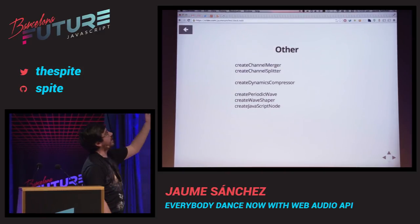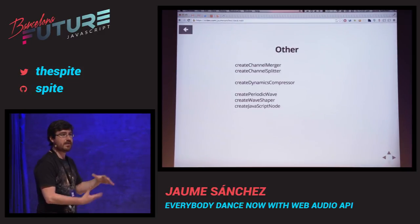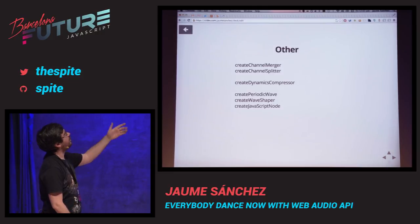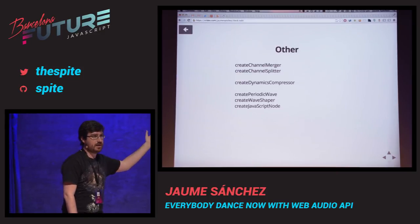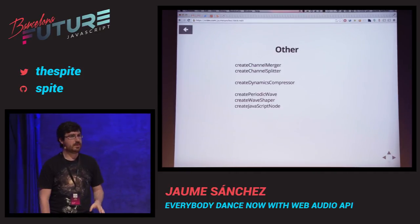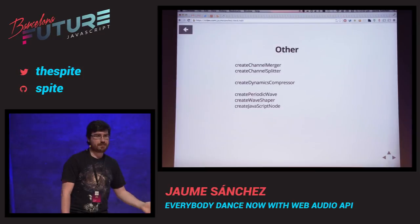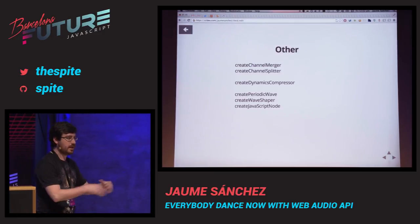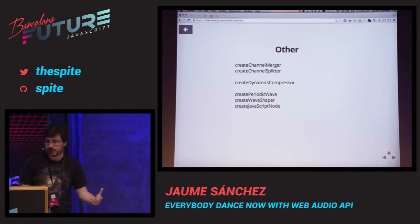There are some other nodes: you can split channels and merge them again. The dynamics compressor tries to prevent clipping and getting things out of hand, so usually you just stick it at the end of your chain before the context destination. You can create periodic waves, a wave shaper — also complex things. And the ScriptProcessor node, which is like the shader of 3D graphics — it allows you to do anything you want with the input and output. Anything not provided by the default nodes you can just create there, like a pitch shift effect. These require a bit of sound programming knowledge.